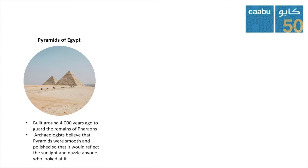A lot of people know about the pyramids, but not many people know why they were built. The pyramids of Egypt were built over 4,000 years ago to guard the remains of the pharaohs who ruled over ancient Egypt. Archaeologists believe that once upon a time, the pyramids were smooth and polished so that they would reflect the sunlight and dazzle anyone that looked directly at them — quite impressive in the middle of the desert.